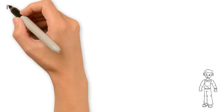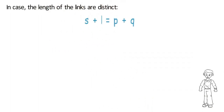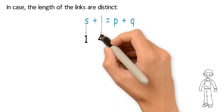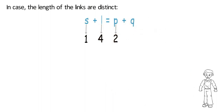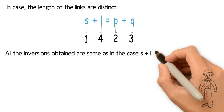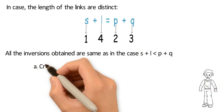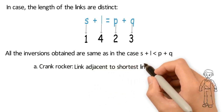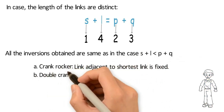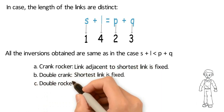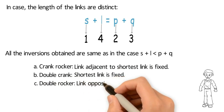In the case where the lengths of the links are distinct — for example S equals 1 unit, L equals 4 units, P equals 2 units, Q equals 3 units — all the inversions obtained are the same as in the case S plus L less than P plus Q. These are: crank rocker, for which the link adjacent to the shortest link is fixed; double crank, for which the shortest link is fixed; and double rocker, for which the link opposite to the shortest link is fixed.